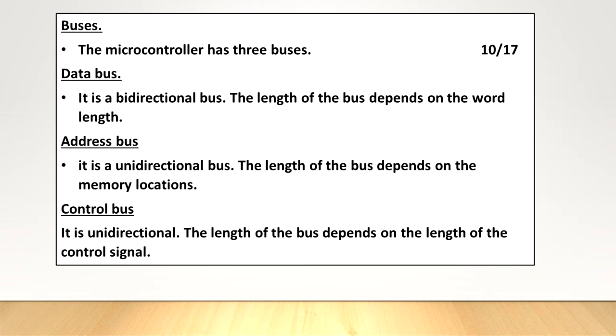Buses. The microcontroller has three buses. Data bus - It is a bidirectional bus. The length of the bus depends on the word length. Address bus - It is a unidirectional bus. The length of the bus depends on the memory locations. Control bus - It is unidirectional. The length of the bus depends on the length of the control signal.